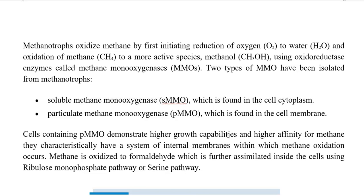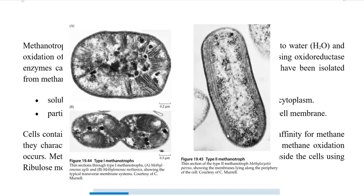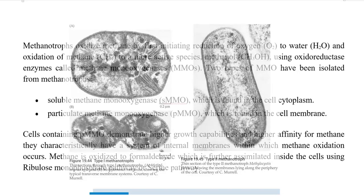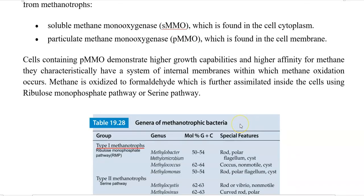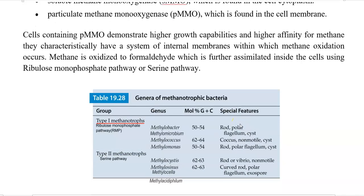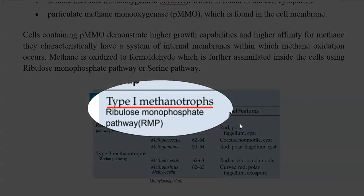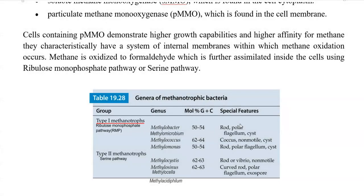Cells containing particulate methane monooxygenase demonstrate high growth abilities as well as high affinity for methane. They characteristically contain internal membranes inside the cell within which methane oxidation usually occurs. Methane is oxidized to formaldehyde, and formaldehyde can be assimilated in the cells by two different pathways. The Type 1 methanotrophic organisms utilize the ribulose monophosphate pathway, and include methylobacter, methylomicrobium, methylococcus, and methylomonas.